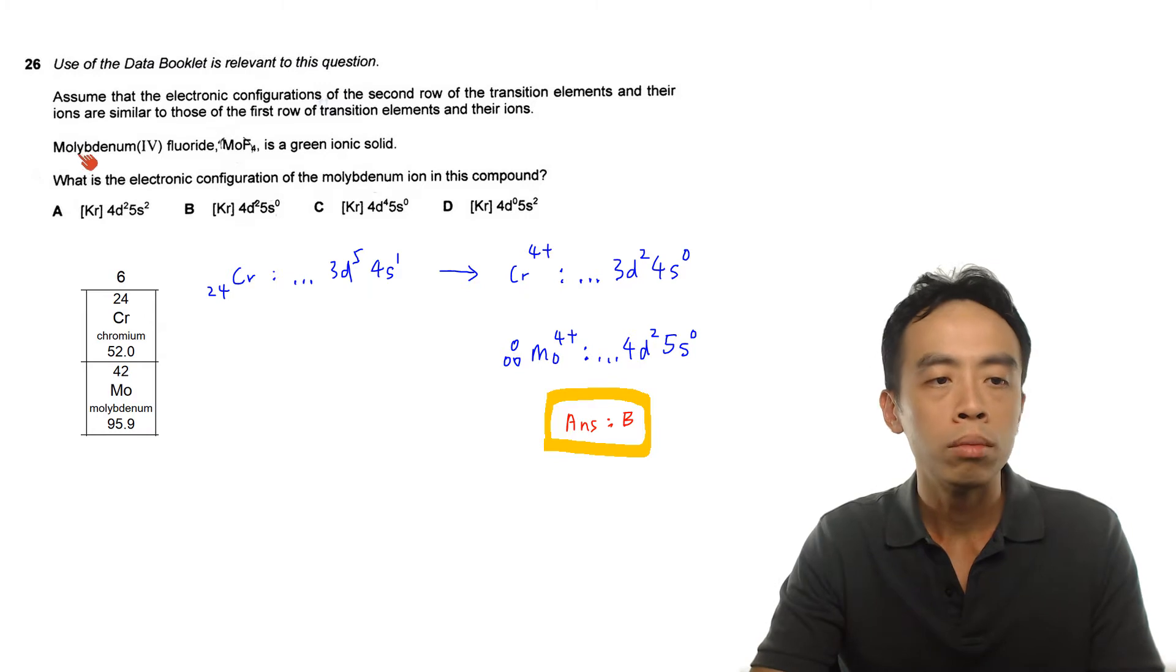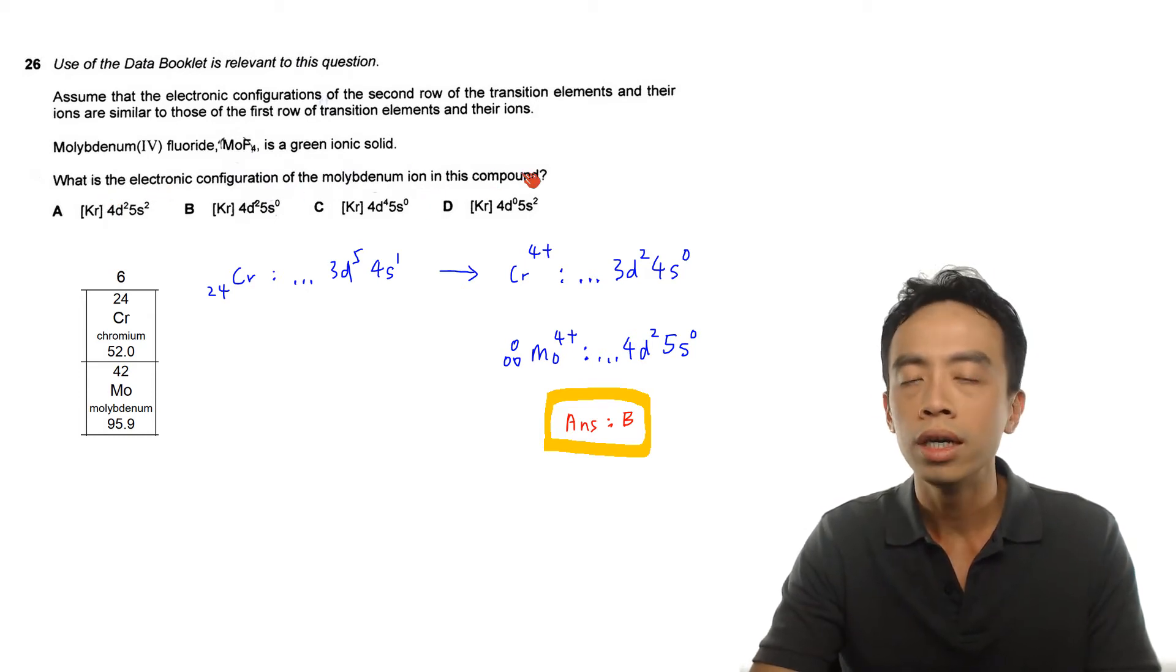So we are given molybdenum tetrafluoride, it's a green ionic solid. What is the electronic configuration of the molybdenum ion in this compound? We are given four options involving the electronic configuration for Mo4+.